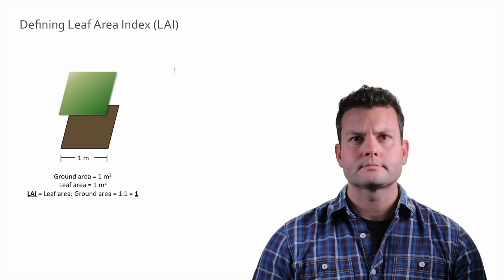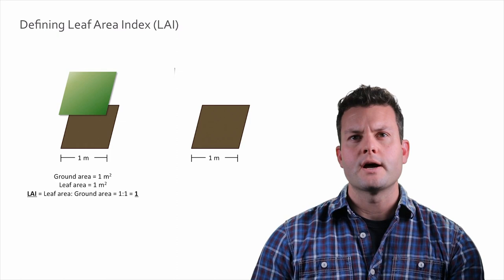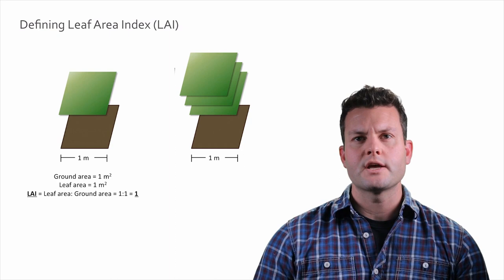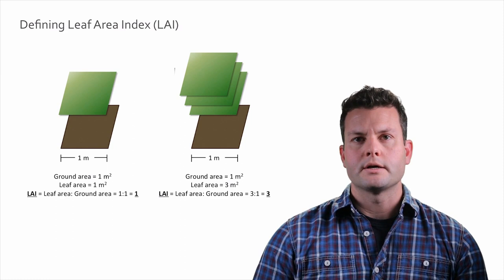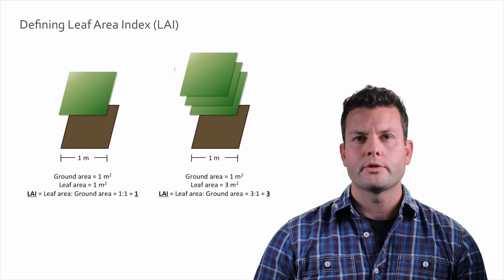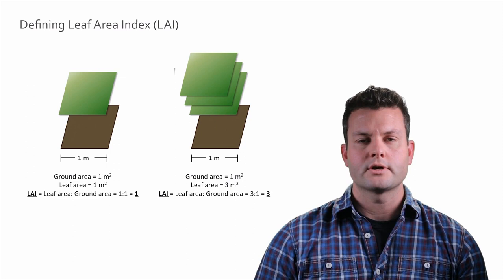One more example: imagine the same plot, but this time with three leaf layers. We have one square meter of ground area and three square meters of leaf area, giving us a leaf area to ground area ratio of three to one, meaning LAI equals three. LAI is not all that complex of a concept to understand.